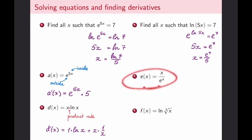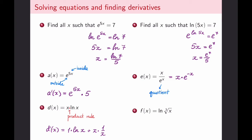For x divided by e^x, there is a ratio involved, so I could apply the quotient rule. Or I can rewrite this as x times e to the power negative x, turning the quotient into a product so I can apply the product rule instead. I'm going to leave this one to you to finish — either rule will work in this case.